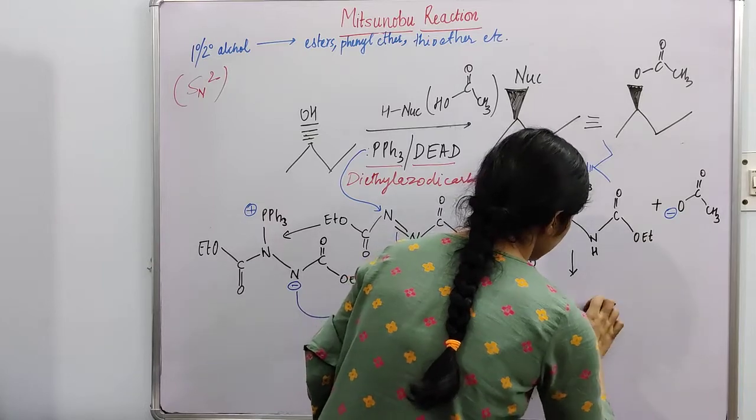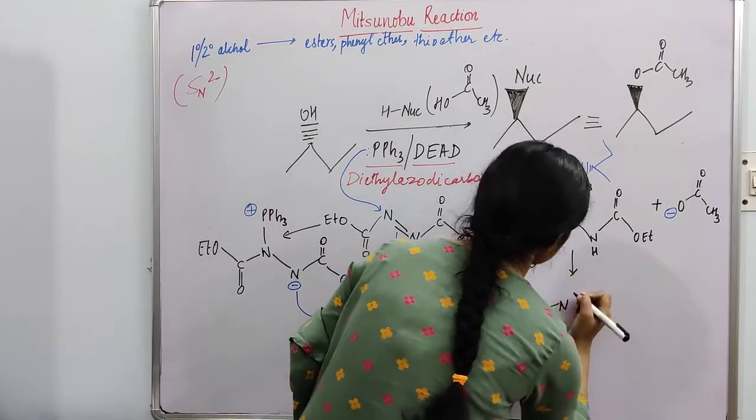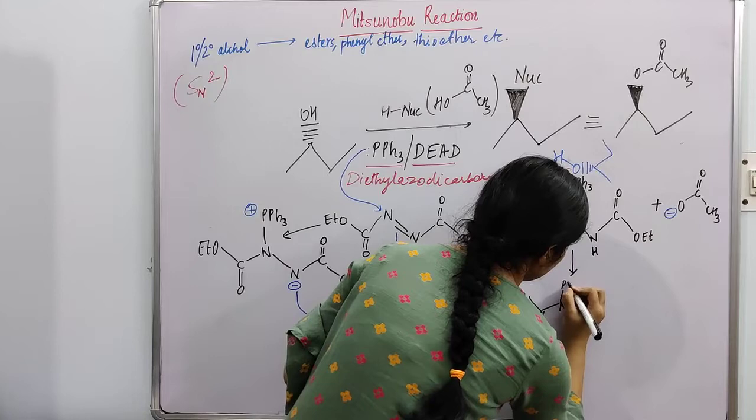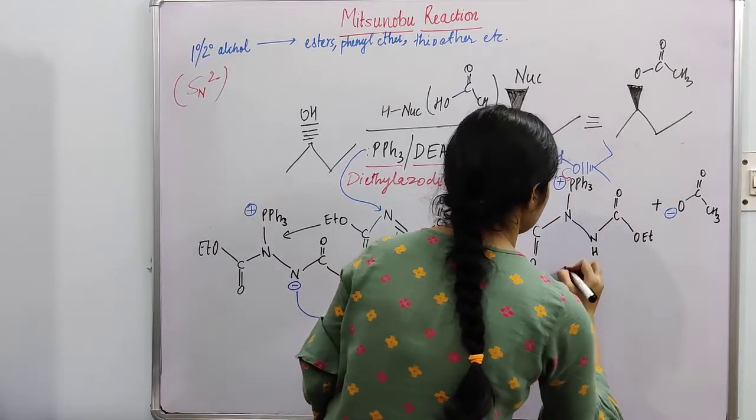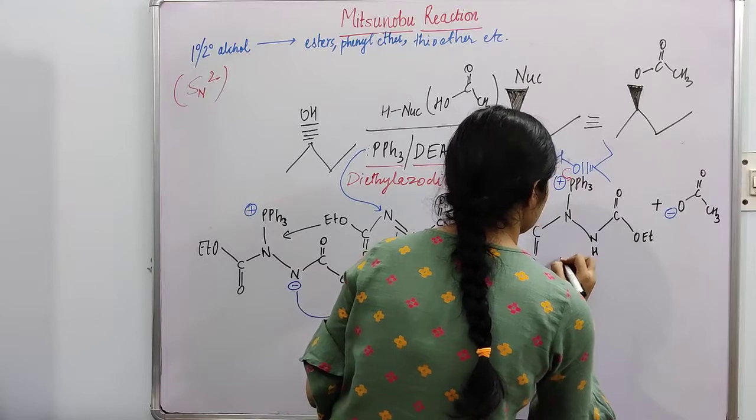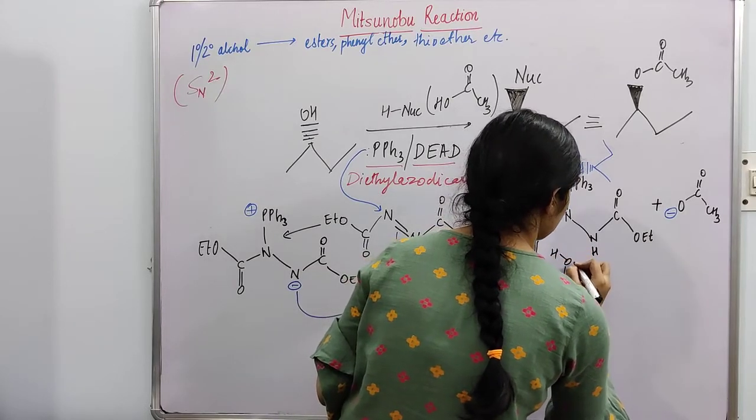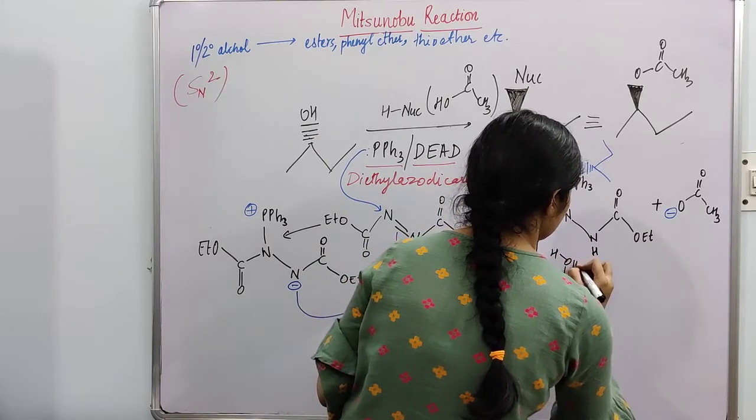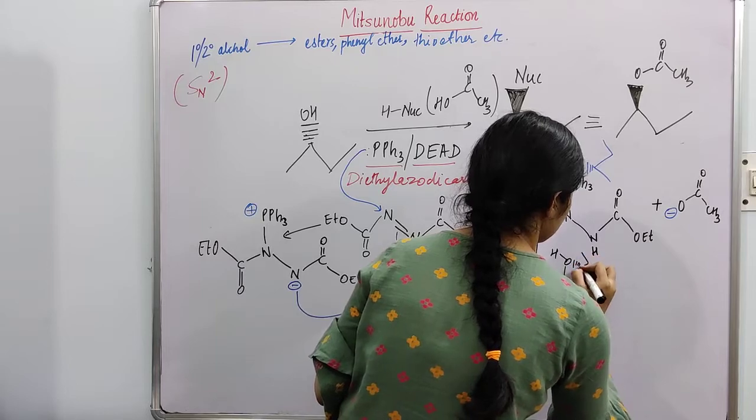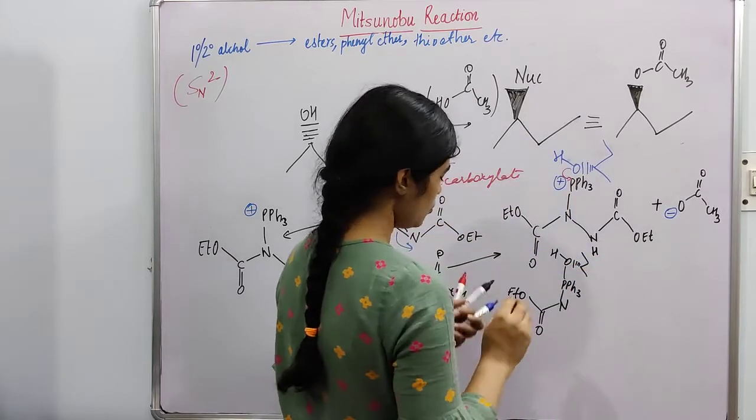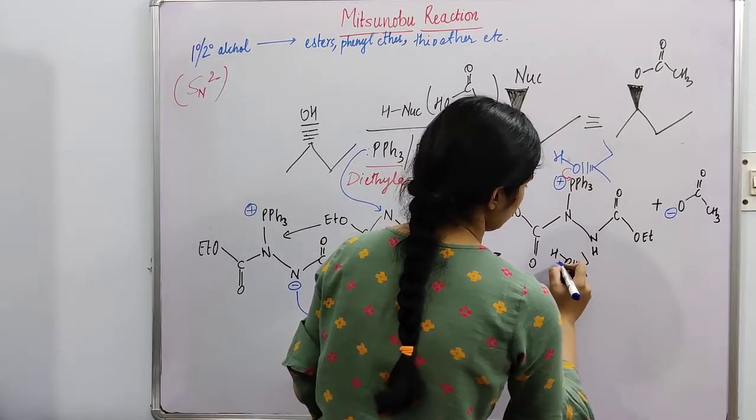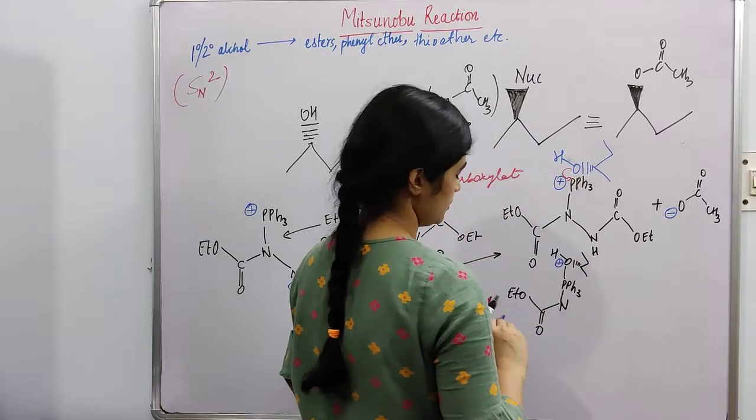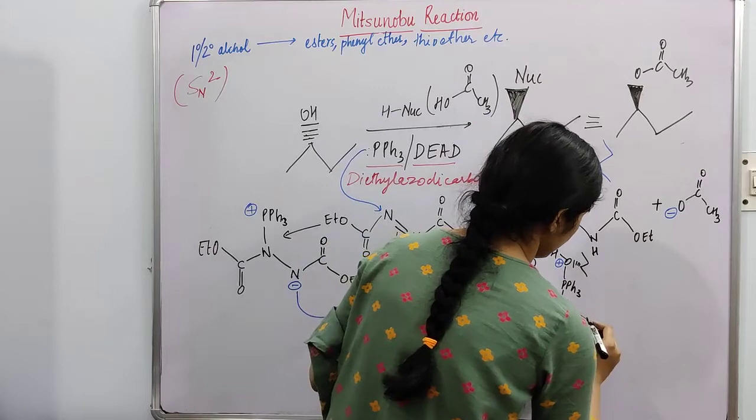Nitrogen as base, nitrogen PPh3. So in this case, this oxygen will have positive charge, and we will write down the remaining structure.